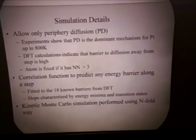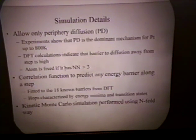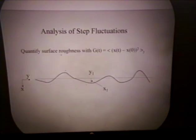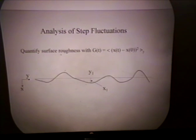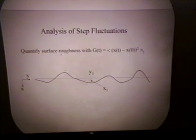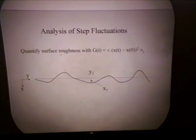Given that we have the energy barriers to any type of move along the step, we can then simulate the dynamics using kinetic Monte Carlo — in particular, an algorithm called the n-fold wave. Before discussing what we can get out of these simulations as they relate to chiral surfaces, I want to briefly compare our DFT model to actual results done for straight steps. To do that, I want to introduce the function used to quantify surface roughness in both theoretical and experimental work.